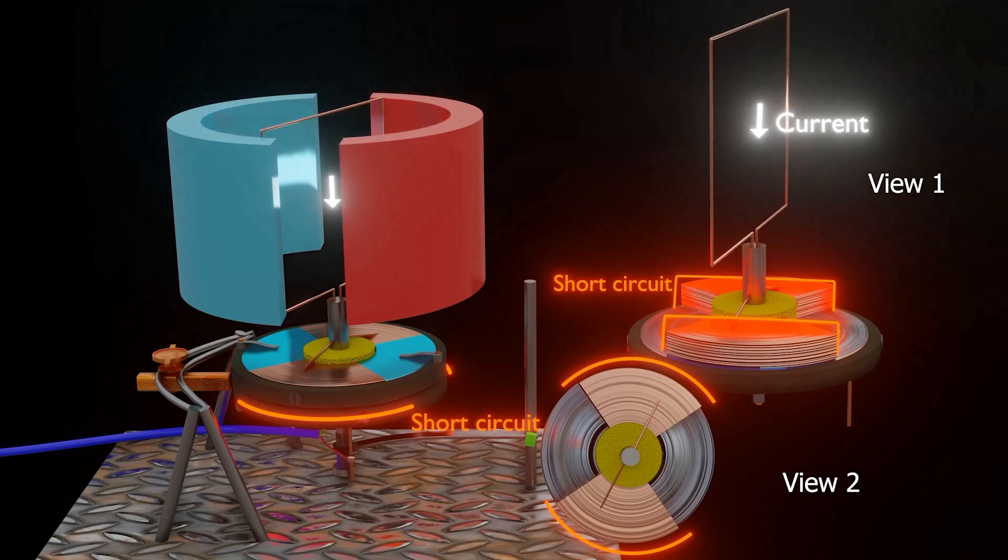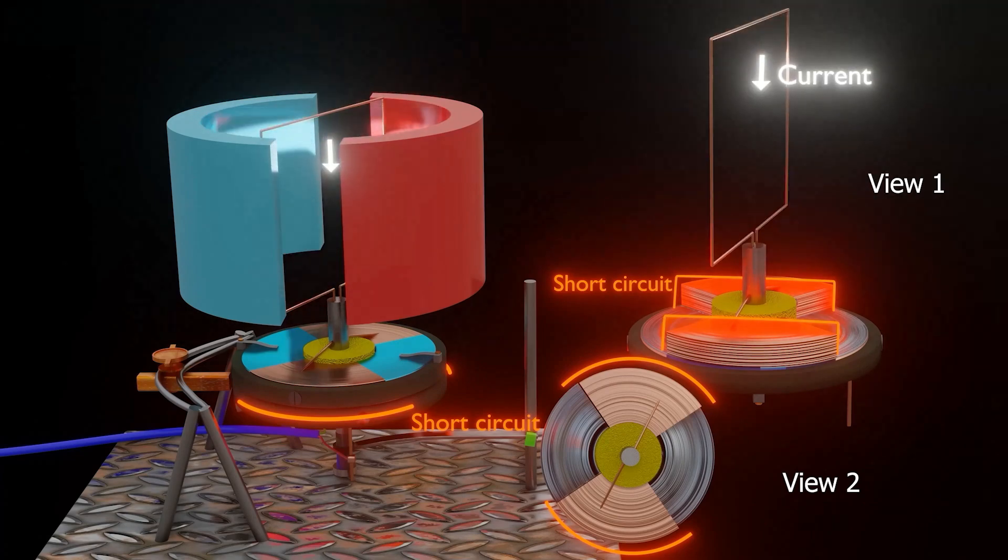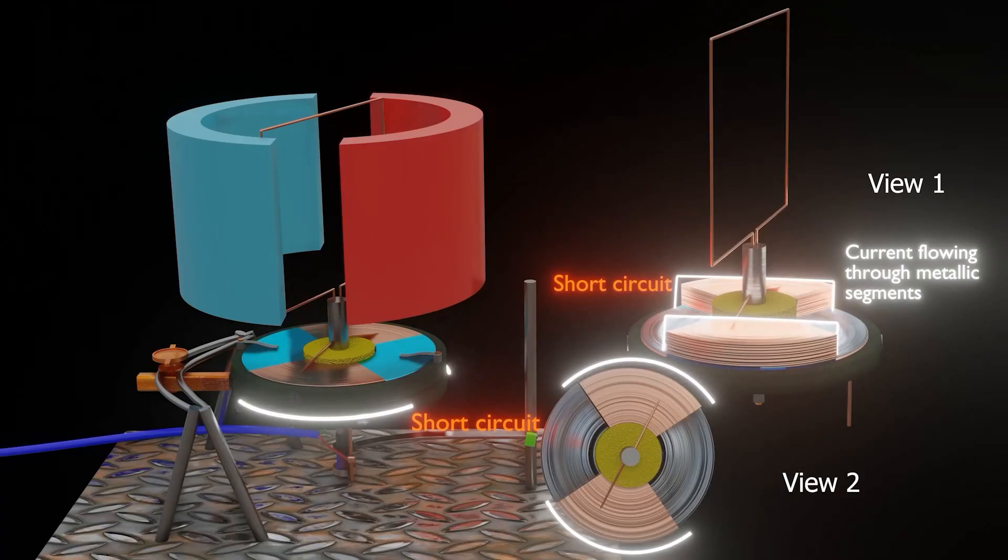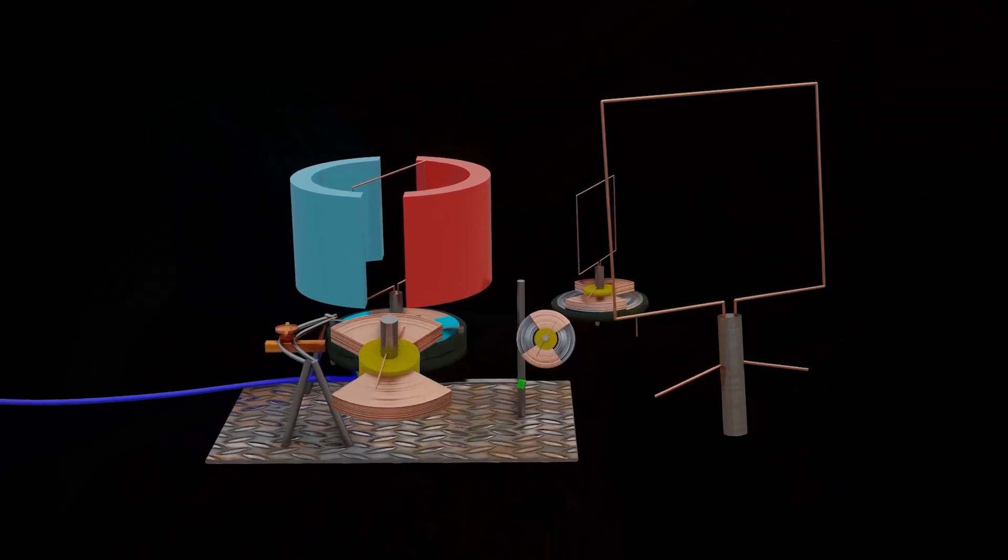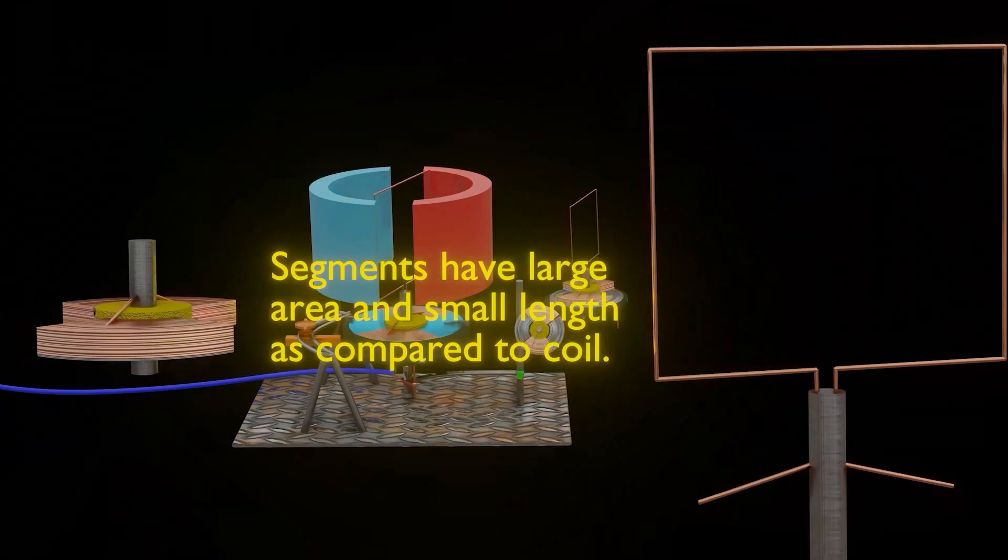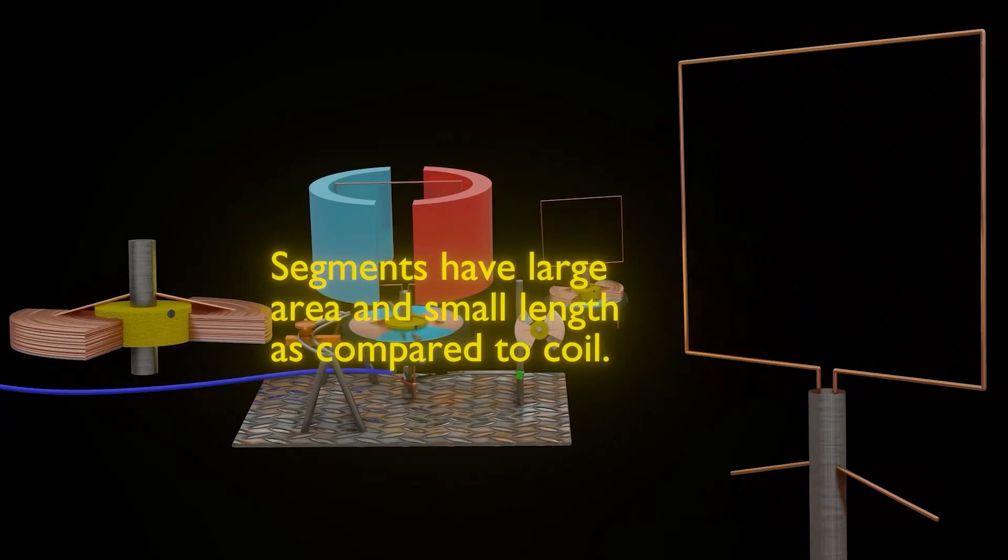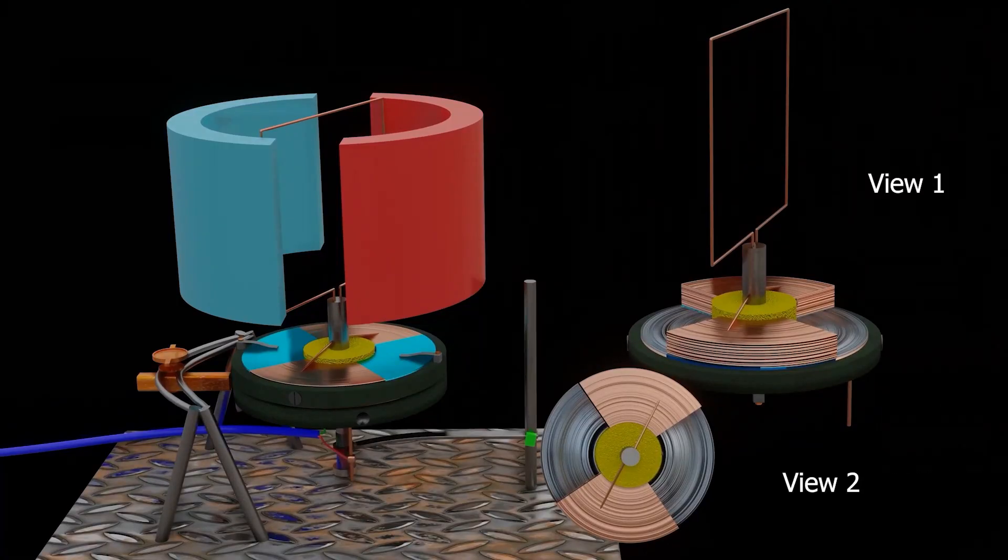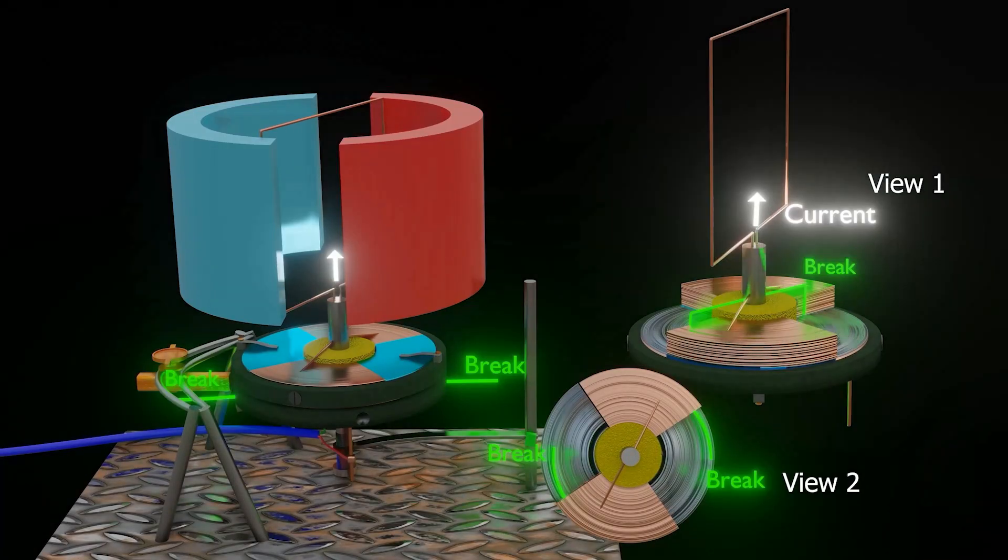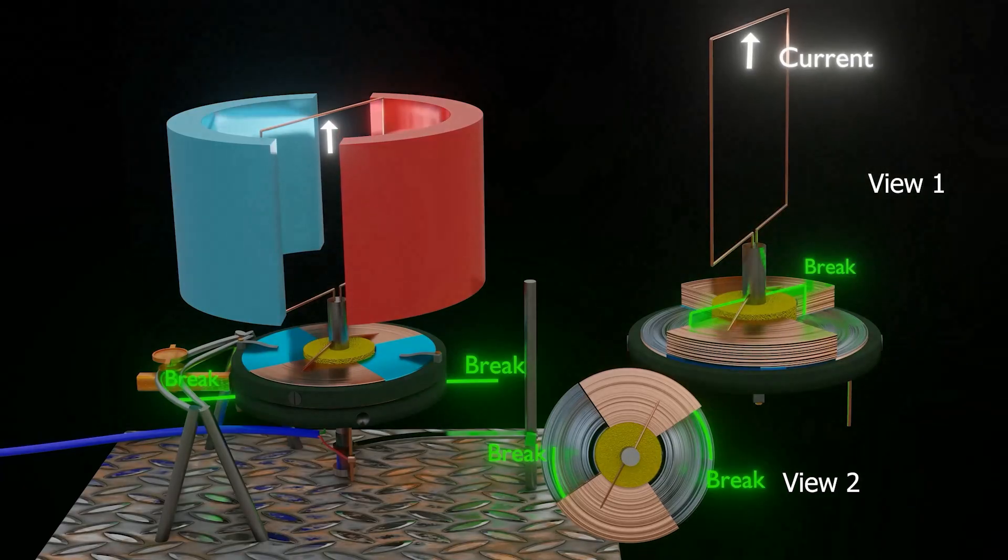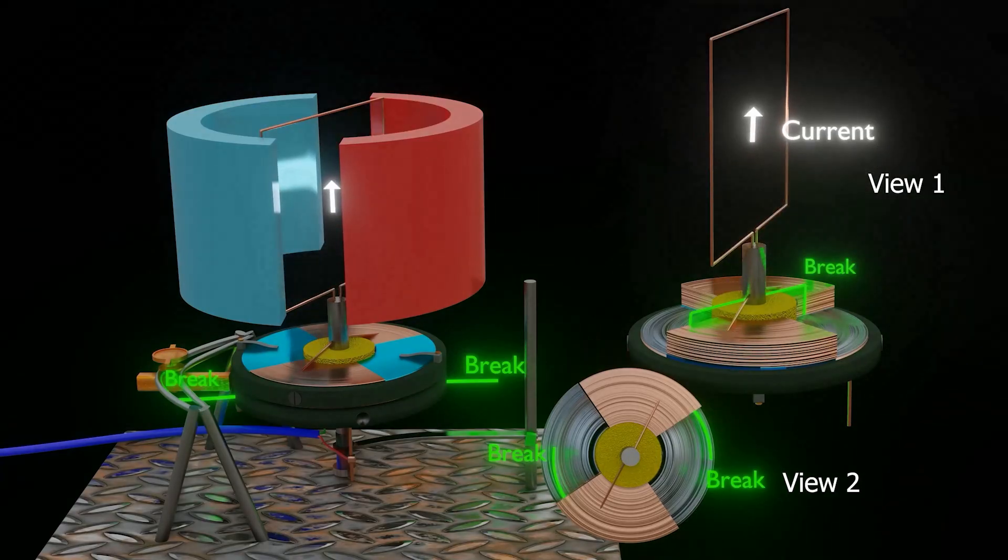When there is a short circuit, there will be a sudden decrease of current in the armature coil because now the entire current will bypass the coil and flow through the metallic segments only. This happens because the segments have large cross-section area and small length as compared to coils. Therefore, it offers less resistance to the current. And when there is a break, there will be a sudden increase of current in the armature coil because now the entire current will flow through the coil.